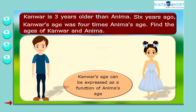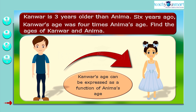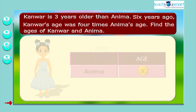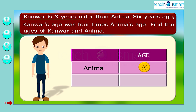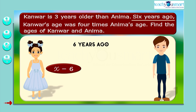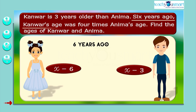Kunwa's age can be expressed as a function of Anima's age. Let's take the age of Anima as X years. Given that Kunwa is three years older than Anima, the age of Kunwa is X plus three years. Six years ago, the age of Anima was X minus six years, and the age of Kunwa was X plus three minus six, that is X minus three years.